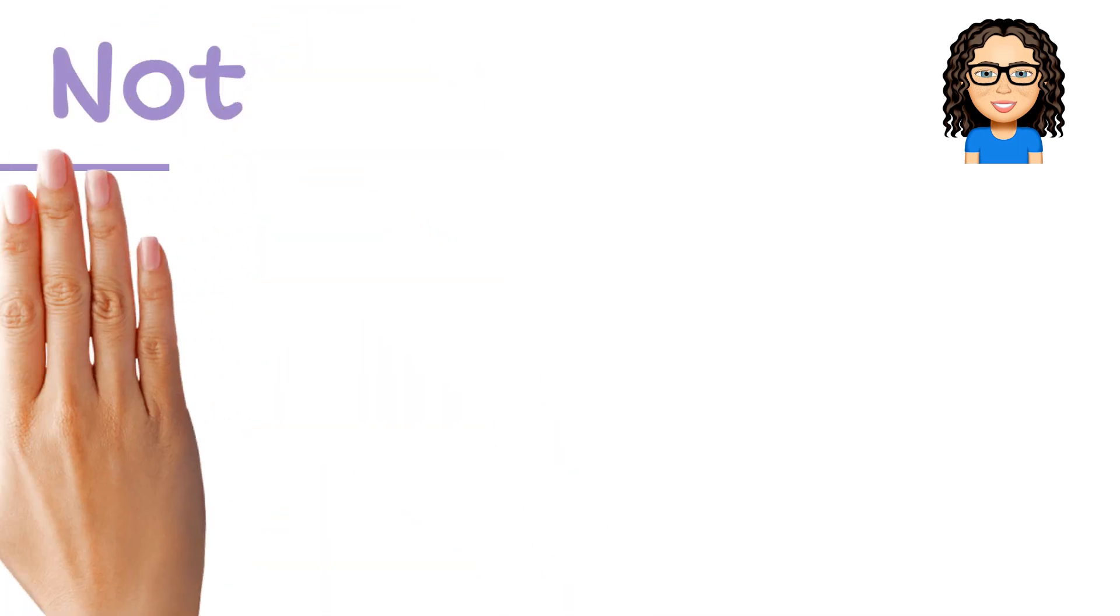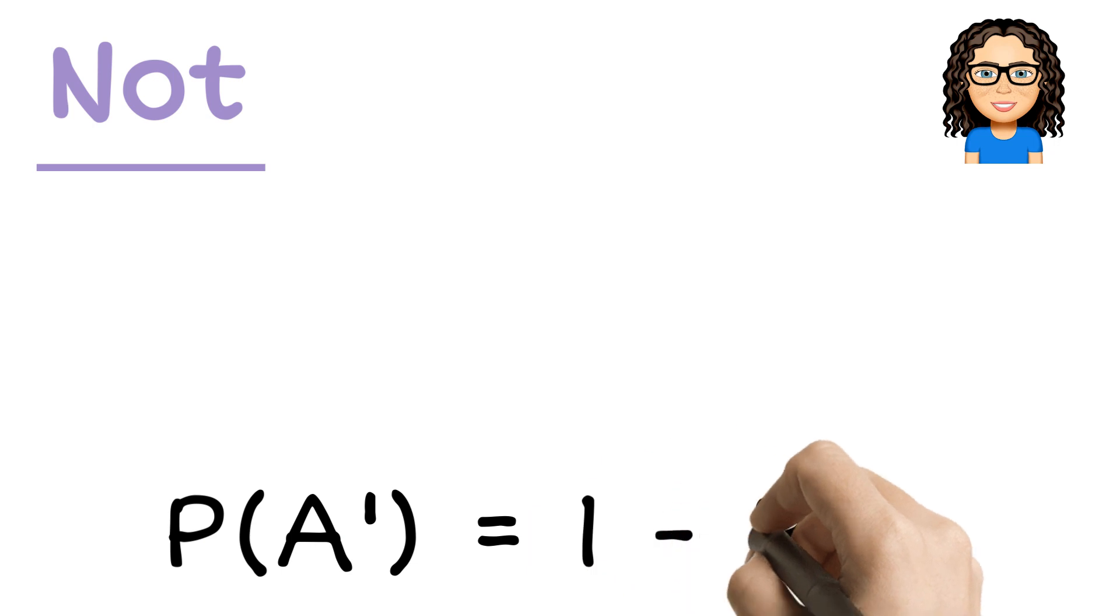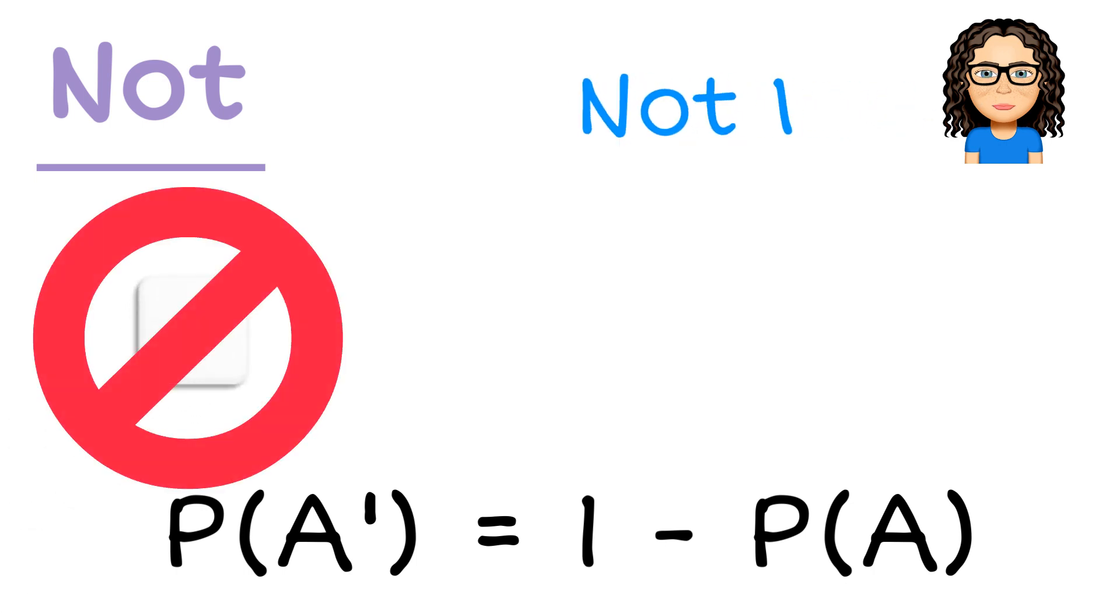The first rule that we'll look at is the idea of not. So the idea for not is thinking about what I want and what's the whole thing. If I was to roll a dice and get a one, the chance of not getting a one is everything else.